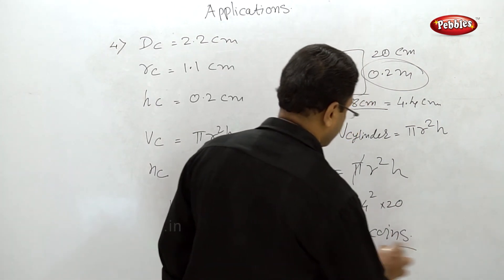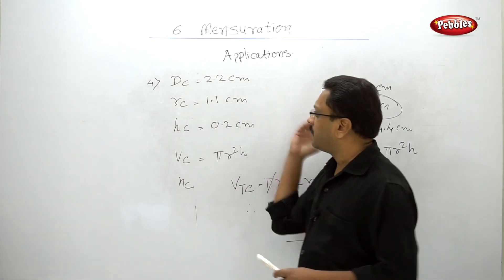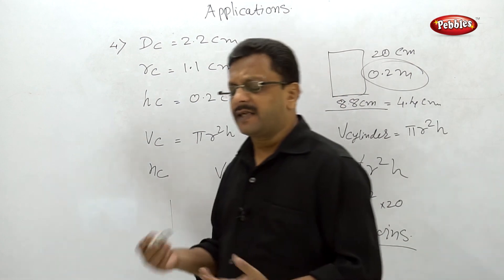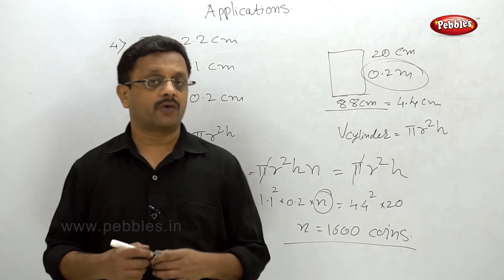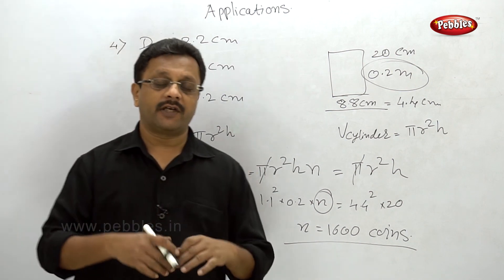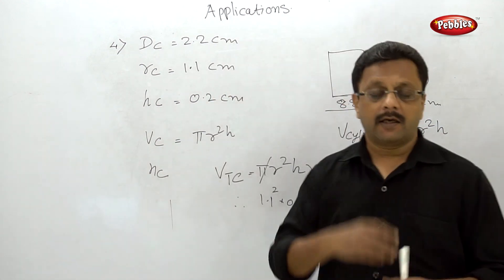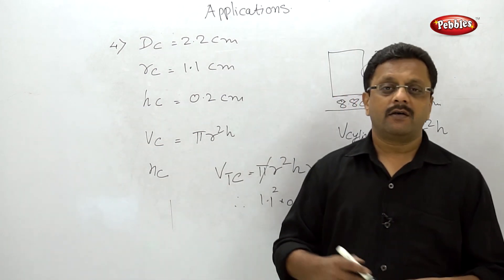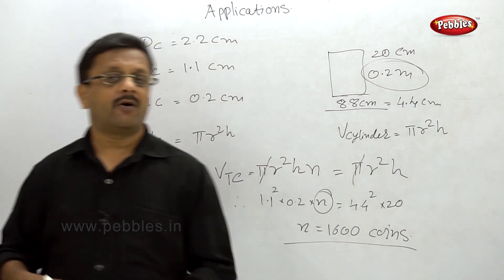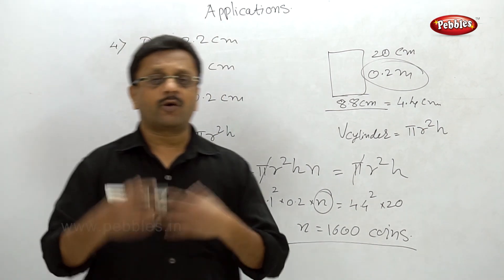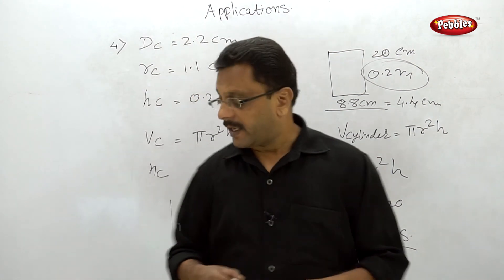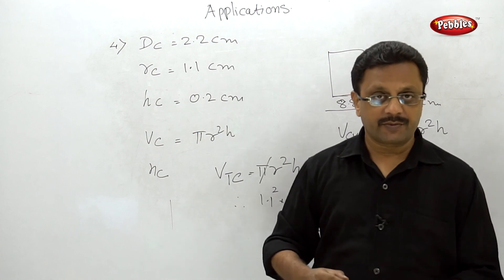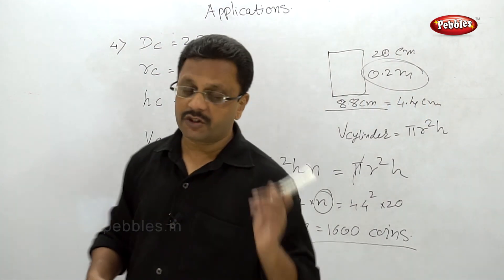So friends, here are some examples of the topic 'Applications in Mensuration.' There can be combinations of different solids, like a cone on a cylinder. Another type involves melting one solid and creating another — in that case you find the length, height, or radius of the new solid depending on its shape. We will now move to Exercise 6.8, the last exercise of Chapter 6 on mensuration, after which we will solve the problem set. Thank you.